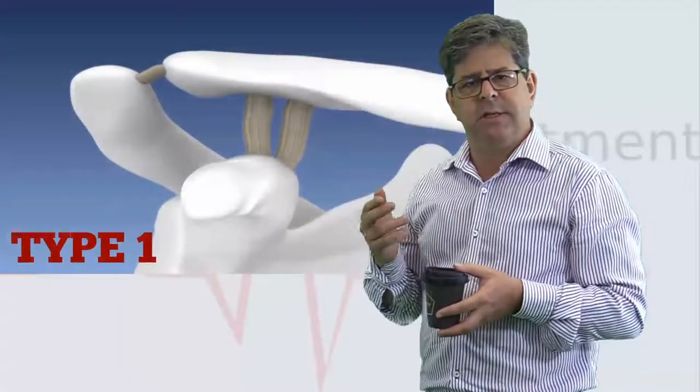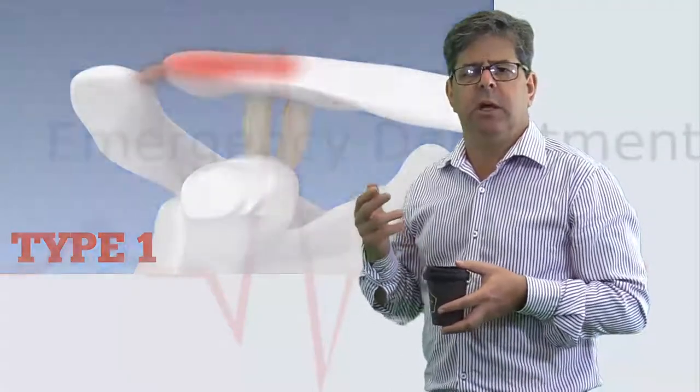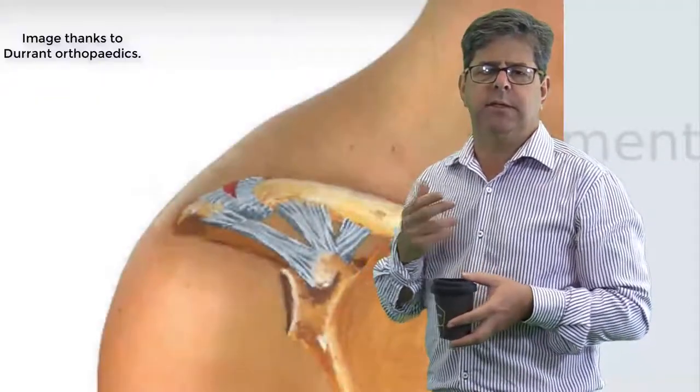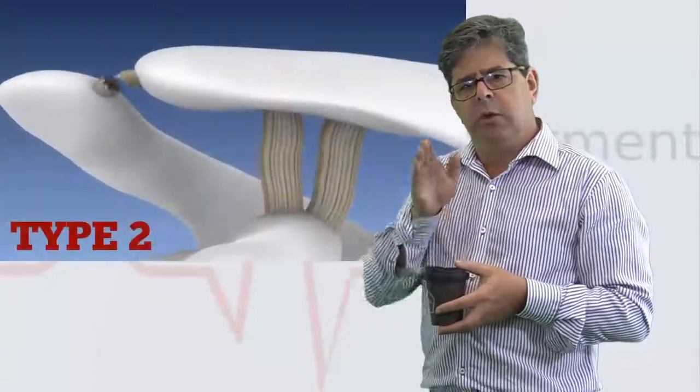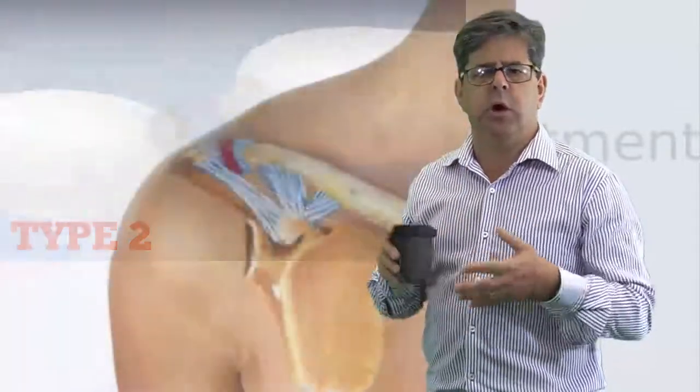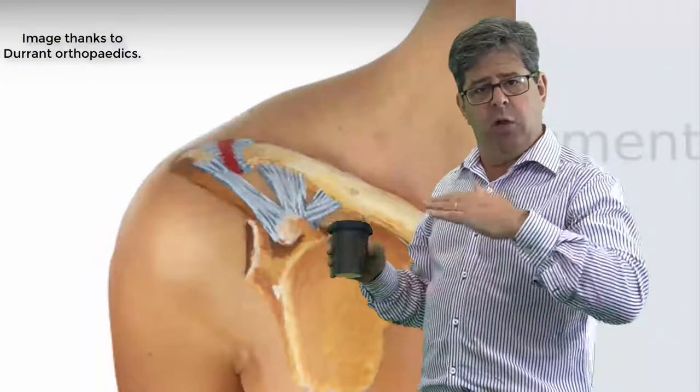So one is essentially a sprain, it's an incomplete rip of the AC ligament. Two, it goes all the way through the AC ligaments but the coracoclavicular ligaments are still holding the clavicle down.